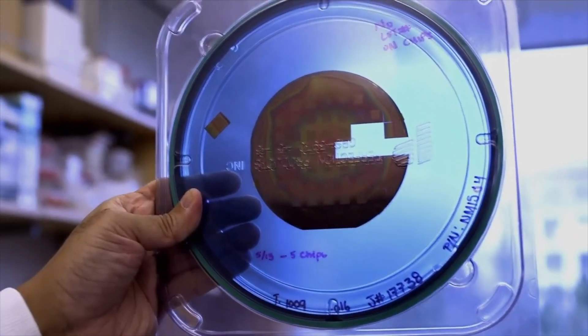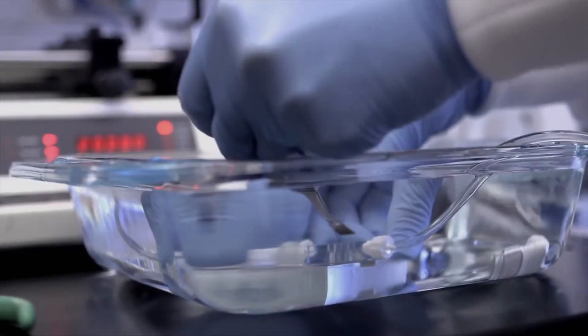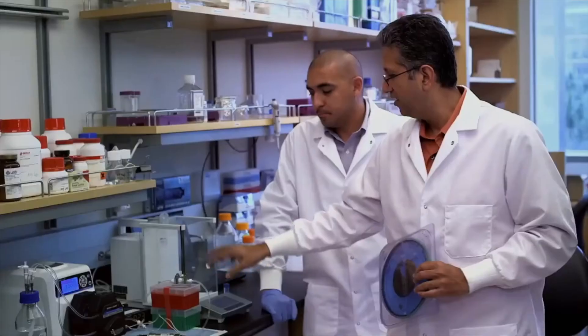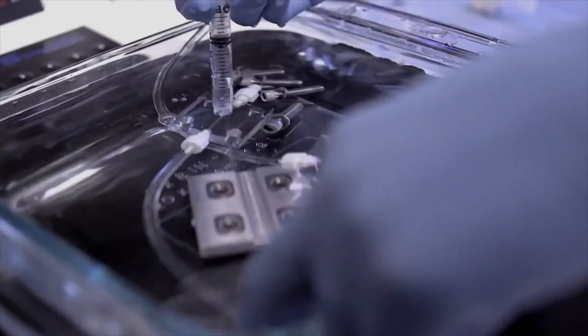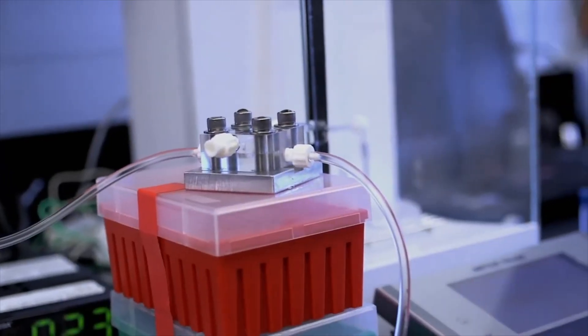So we take these membranes, cut them into little squares, we test each of the individual membranes for how they perform in terms of filtration. We challenge it with water and particles in the water that are very small, and we see how much water comes out and what particles come out.